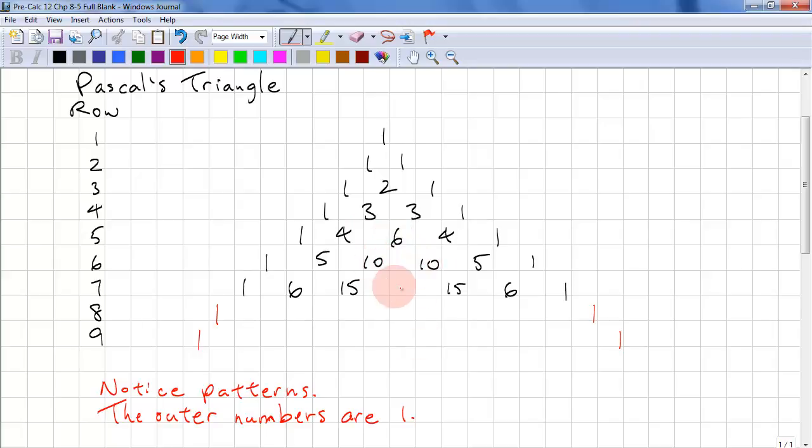So here we have 10 plus 10. This should be 20. Here, 1 plus 6, that's 7. 1 plus 7 is 8. And there's symmetry here.